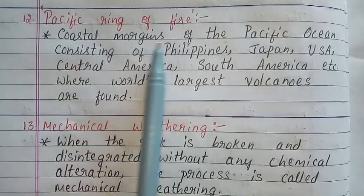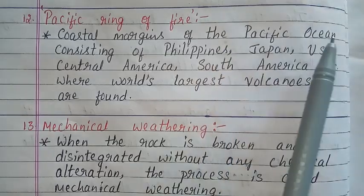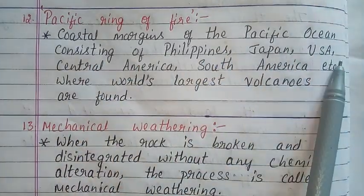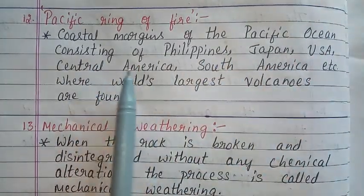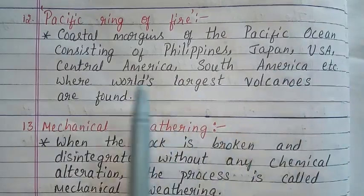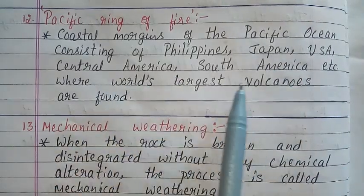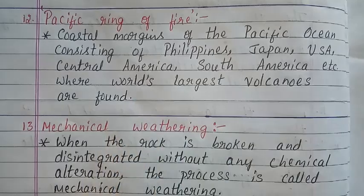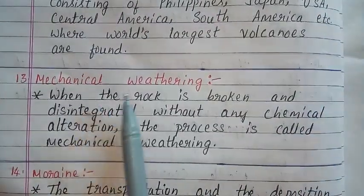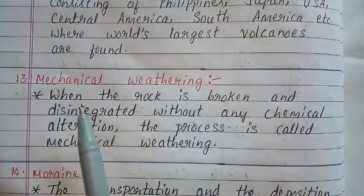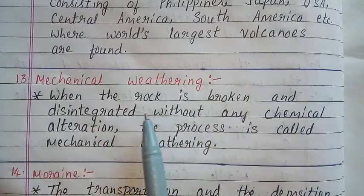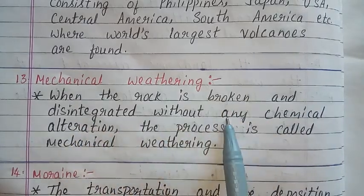Answer: The Pacific Ring of Fire refers to the coastal margins of the Pacific Ocean — consisting of Philippines, Japan, USA, Central America, South America, etc. — where the world's largest volcanoes are found.